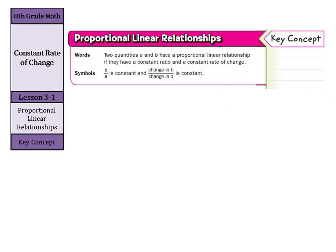One of our key concepts today involves proportional linear relationships. In words, two quantities A and B have a proportional linear relationship if they have a constant ratio and a constant rate of change. In symbols, B over A is constant and change in B over change in A is constant.